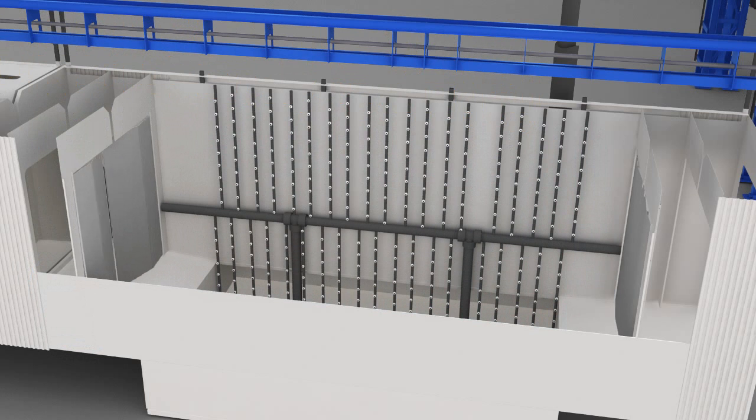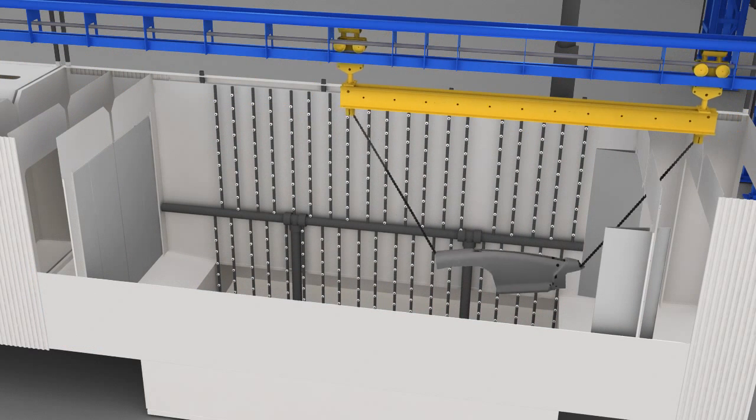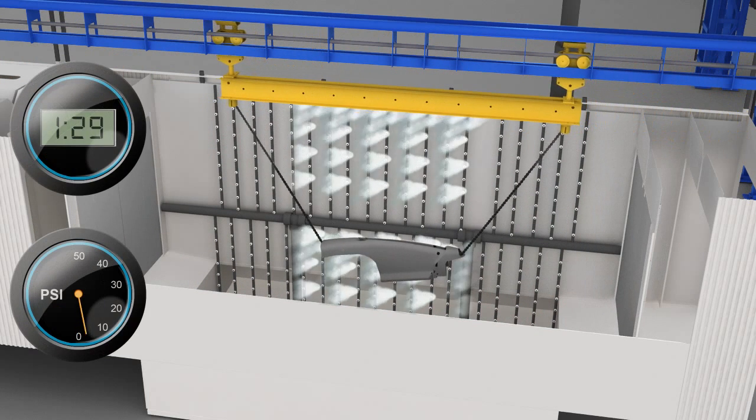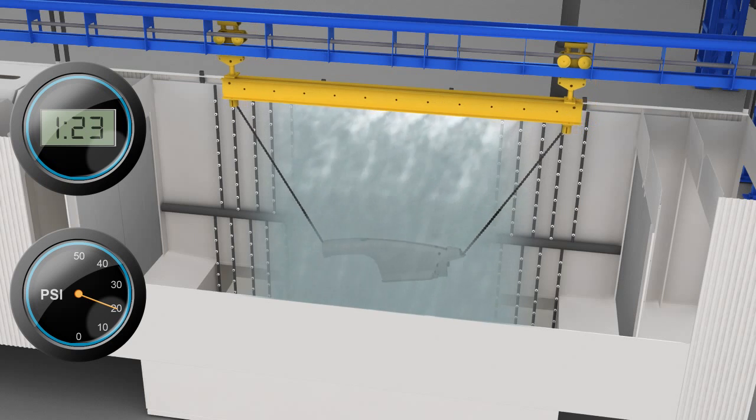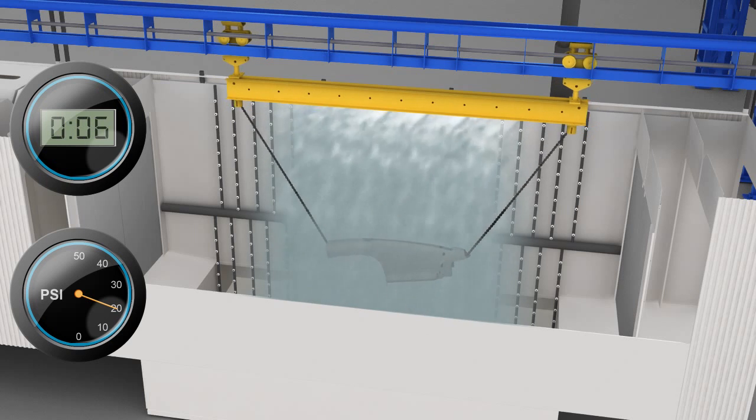To reduce waste and energy consumption, IntelliFinishing's modular washers contain separate wash sections that can be programmed independently. When washing smaller parts, turn on only the sections you need and save money with every part you run.